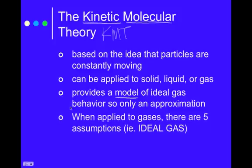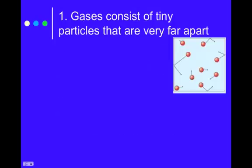Because this is a model of an ideal gas behavior, it's only an approximation of what a real gas is going to do in the real world. When the KMT is applied to gases, there are five assumptions. If a gas adheres to all five assumptions, then it is an ideal gas. As we go through each of the five assumptions, I'm going to tell you how a gas can deviate from that assumption and cause that particular gas to be less ideal.